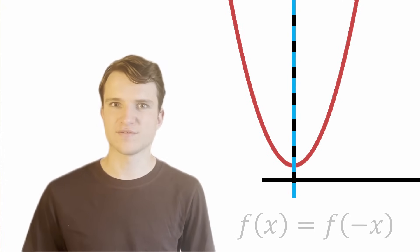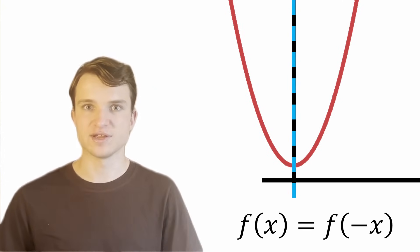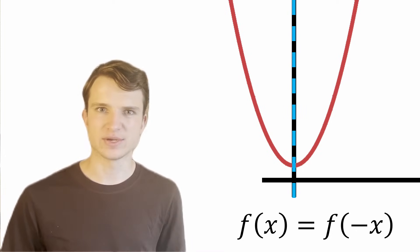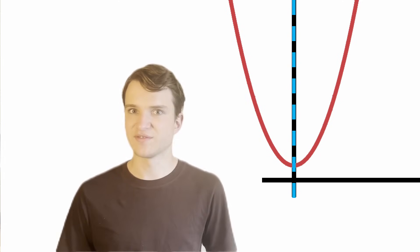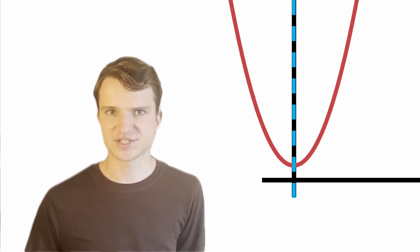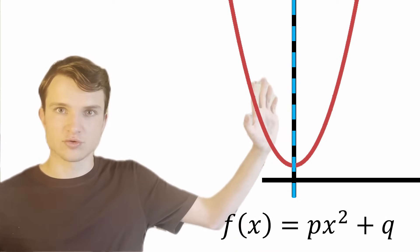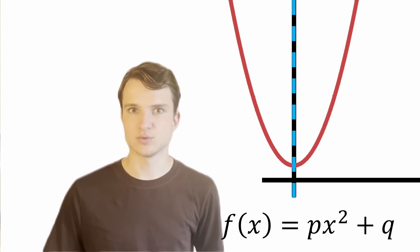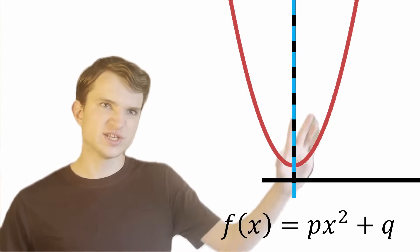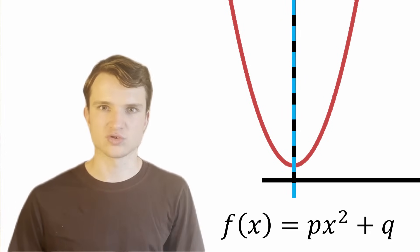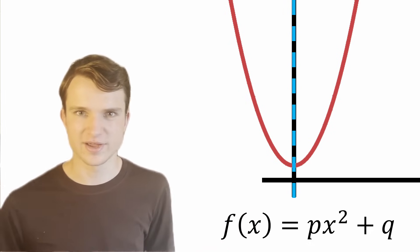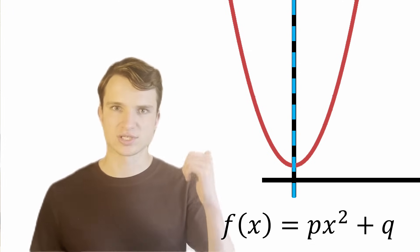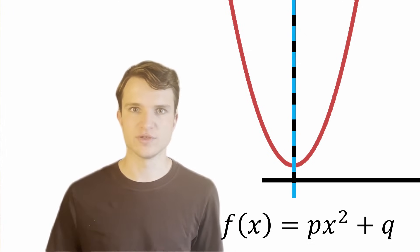An even function is a function that has a line of symmetry on the y-axis, or more precisely, it's a function where f(x) equals f(-x) for every value of x. The important fact about even functions is that they have only even powers of x. So our quadratic equation can have an x² term and a constant term, but it can't have an x term, meaning the function will have an equation f(x) = px² + q. And that's called a depressed quadratic — the idea is to turn any quadratic into one that looks like this, which is easy to solve.